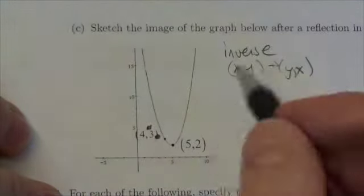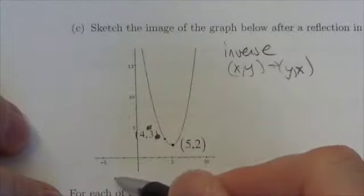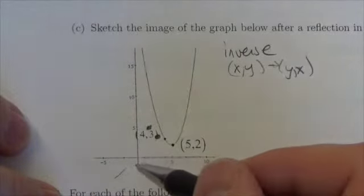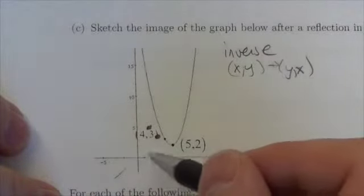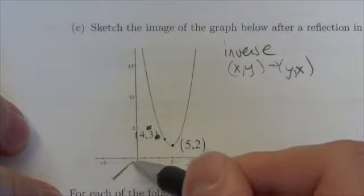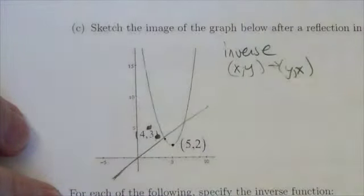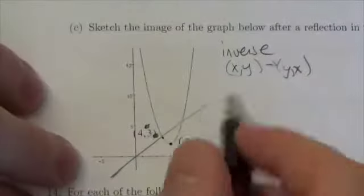Now think about what happens here. This is going to get reflected over... now (4,3), sorry, that looks more like this I think. Anyway, it's going to be reflected over this line here.